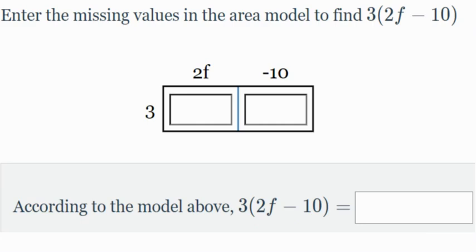So find the missing values in the area model to find 3 and in parentheses 2f minus 10. So we know that 3 times 2f, we're going to multiply 3 times 2, which gives us 6. Keep the f. You keep that variable, 6f. And we know that 3 times negative 10 is going to give us negative 30.